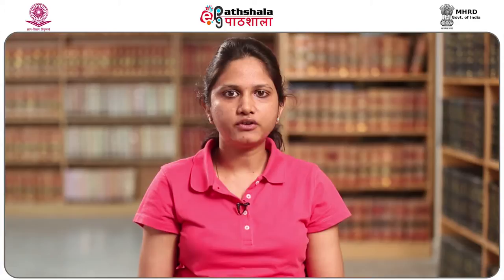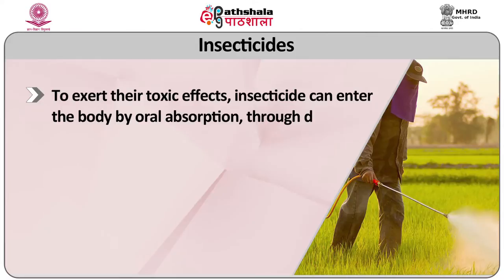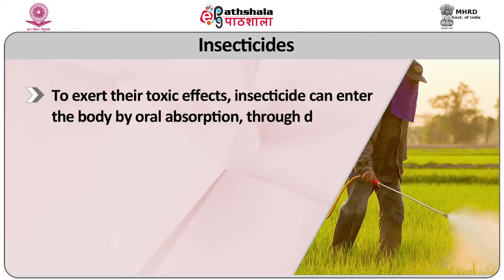How do insecticides enter the body? To exert toxic effects, insecticides can enter the body by oral absorption, through dermal absorption, by inhalation or through eye exposure. These can be ingested orally by accident due to carelessness, such as eating without washing hands after using insecticide, or eating fruits and vegetables that have been sprayed with insecticides containing residue.